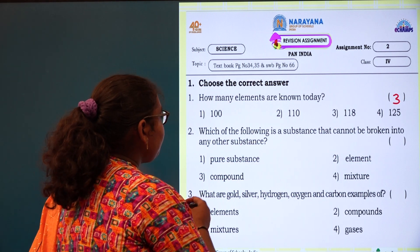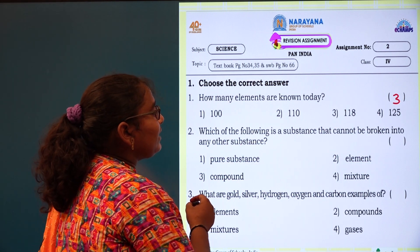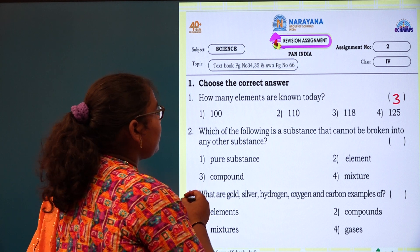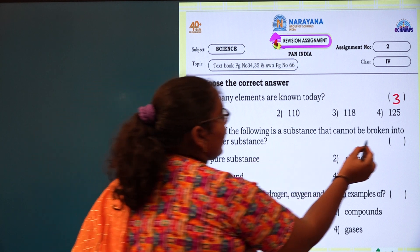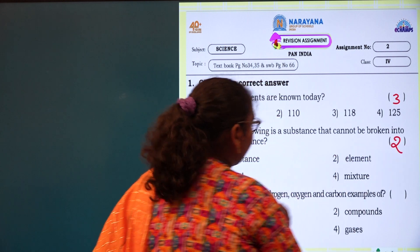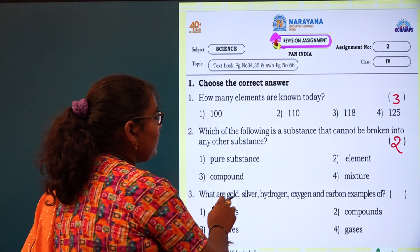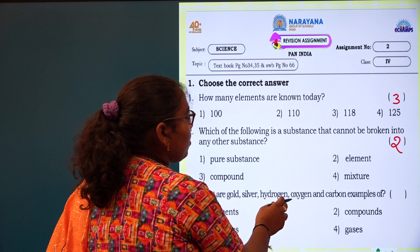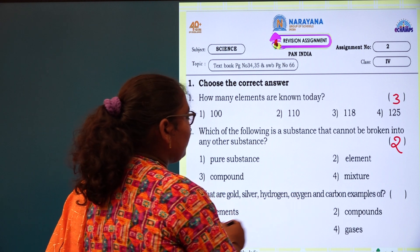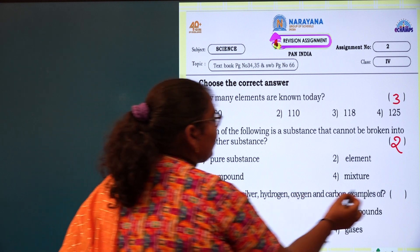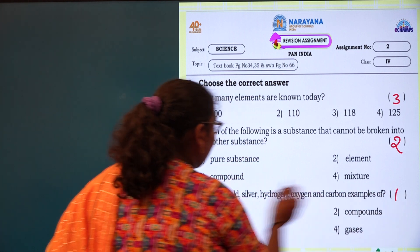Second one: which of the following is a substance that cannot be broken into any other substance is called element? Option number 2. Third: what are gold, silver, hydrogen, oxygen and carbon examples of? They are examples of elements, which option? Option 1.